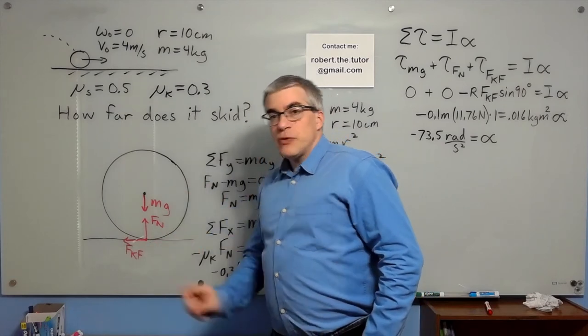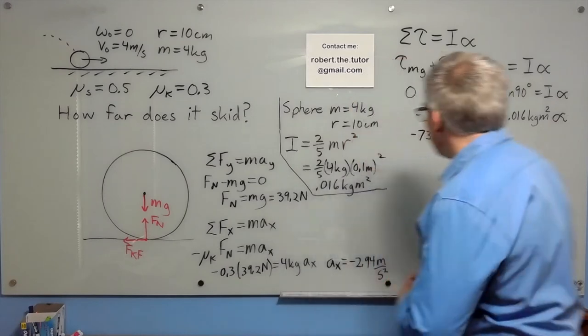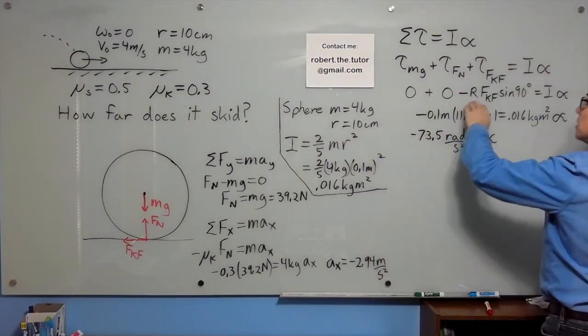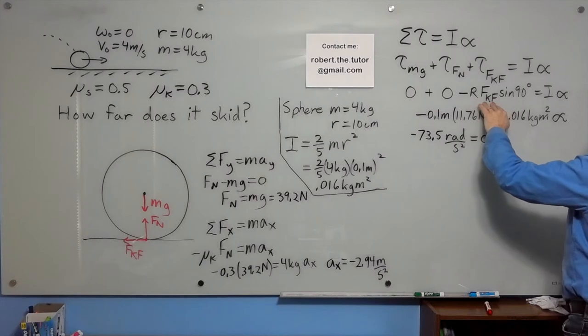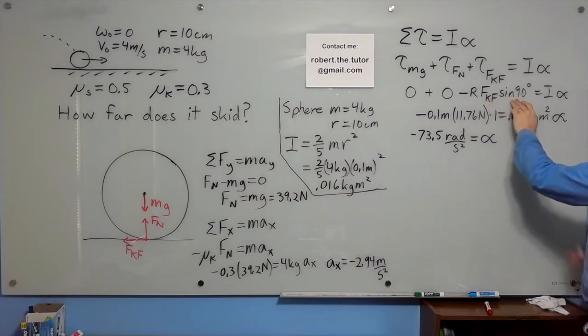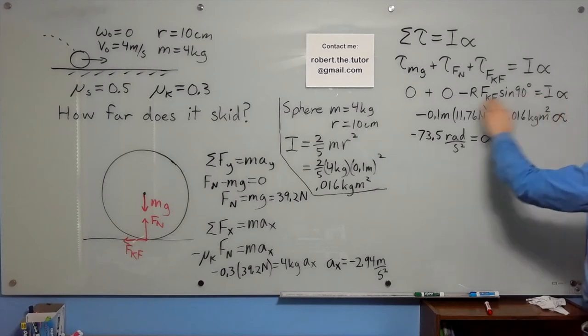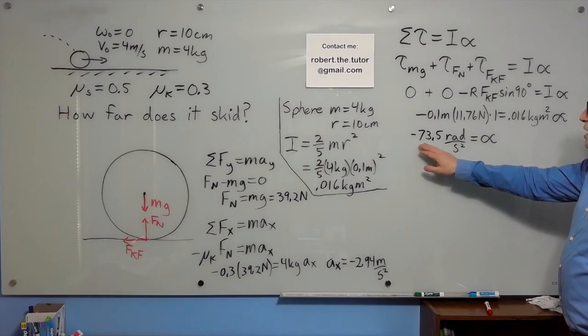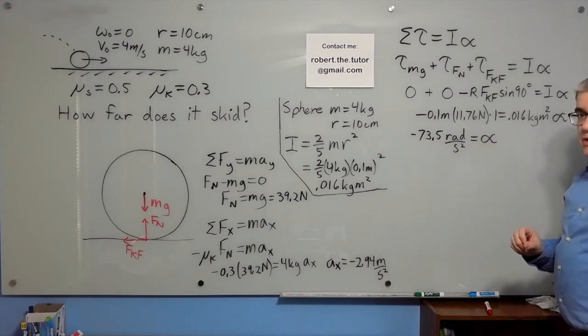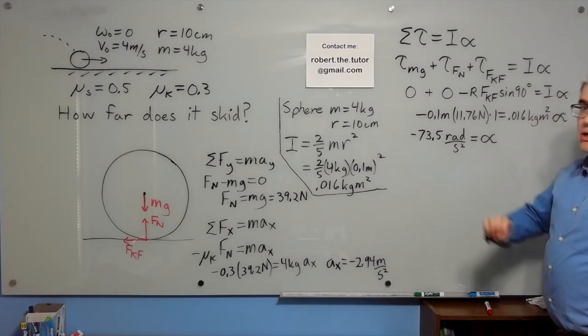The force of kinetic friction is the only one that makes a torque. Minus, because it's clockwise, R times force of kinetic friction times the sine of the angle, and the angle there is 90 degrees. From the pivot to the force along the force draws the angle. Moment of inertia we calculated, and we can find alpha. And when we plug in the numbers, we get negative 73.5 radian per second squared equals alpha. That's a lot of angular accelerations twisting really hard.